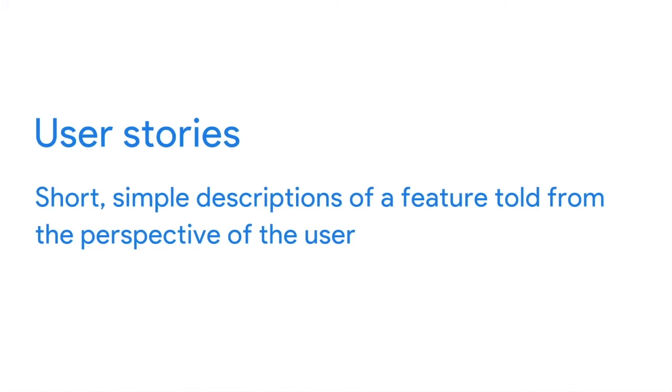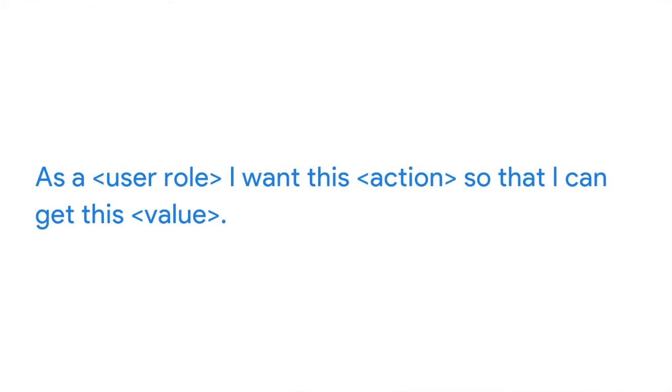Now you know more about defining the product backlog, who owns it, how various roles work with it, and how to identify each field. Let's discuss a popular way to capture and manage backlog items: user stories. User stories are short, simple descriptions of a feature told from the perspective of the user. This helps the team create a solution always centered around the user and the user experience. User stories are made up of three elements: the user, the action they will take, and the benefit to them. The most common format is: 'As a [user role], I want [this action] so that I can get [this value].'